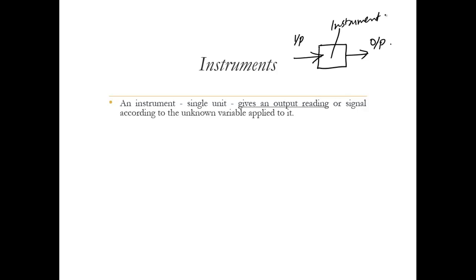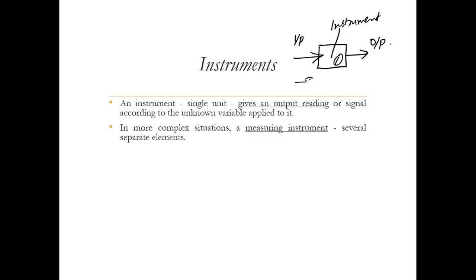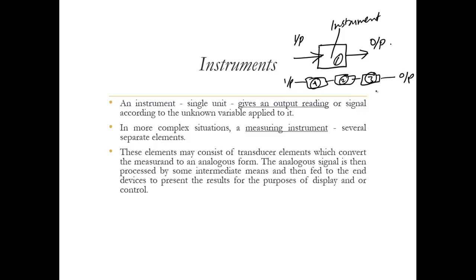In more complex situations, a measuring instrument consists of several elements rather than just one. We can have several stages of these elements with an output and an input. These are the different stages in any instrument — we have standard stages that we have defined, which obviously consist of some transducers, signal processing, and display elements.